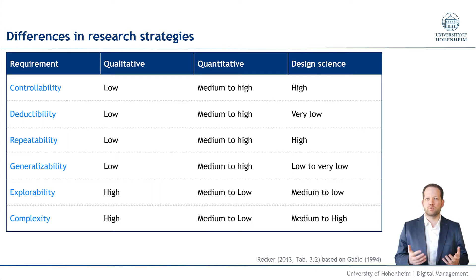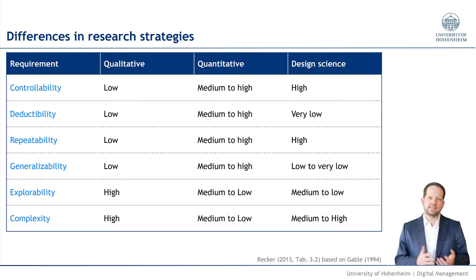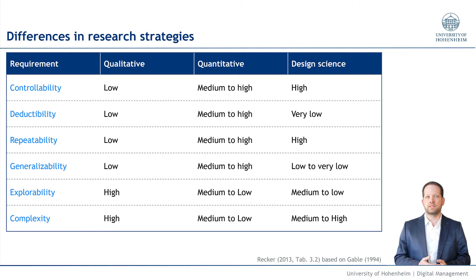Controllability is about how strongly you're able to control your research settings and your research findings. In a qualitative setting, in an ethnography or in a case study, controllability is low — you immerse deeply into the context and you don't control it. In a quantitative study, such as structured surveys or experiments, you control at least the data collection, and in an experiment you even control the environment and the stimuli, so controllability is a lot higher. In design science, it's typically high because you design the artifacts and bring them into the world, so you control what the design looks like.